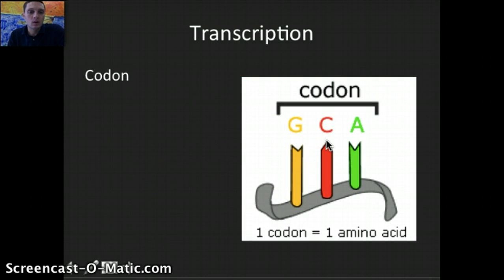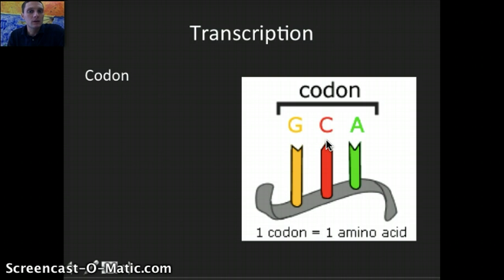Some additional background: a codon is a way that we group nucleotides into a group of three — three nucleotides make up a codon. This is important because tRNA, or transfer RNA, which eventually matches up with messenger RNA, does so at three nucleotides, or three nitrogen base pairs. Those three nitrogen bases form a codon, and one codon is responsible for one amino acid. On messenger RNA, three nucleotides or nitrogen bases in a row make a codon, and that matches with tRNA in a lock-and-key method.